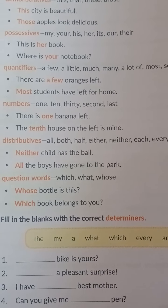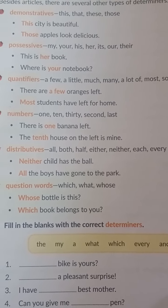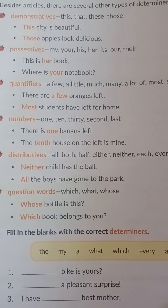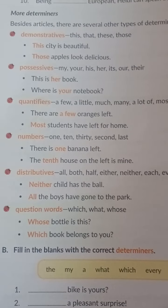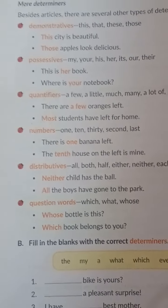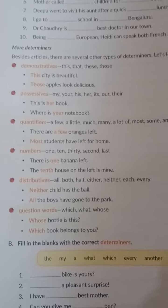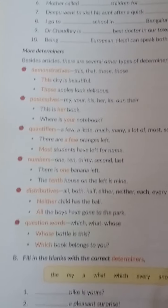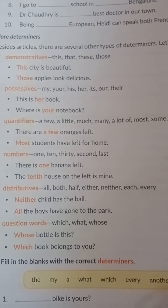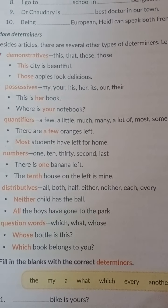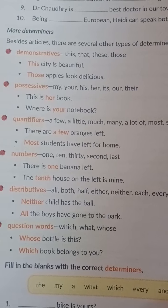Question words like which, what, whose — for example: 'Whose bottle is this?' 'Whose book belongs to you?' These are interrogative determiners. I hope students you have been very clear about determiners. Soon we will be uploading the exercises. Thank you students.